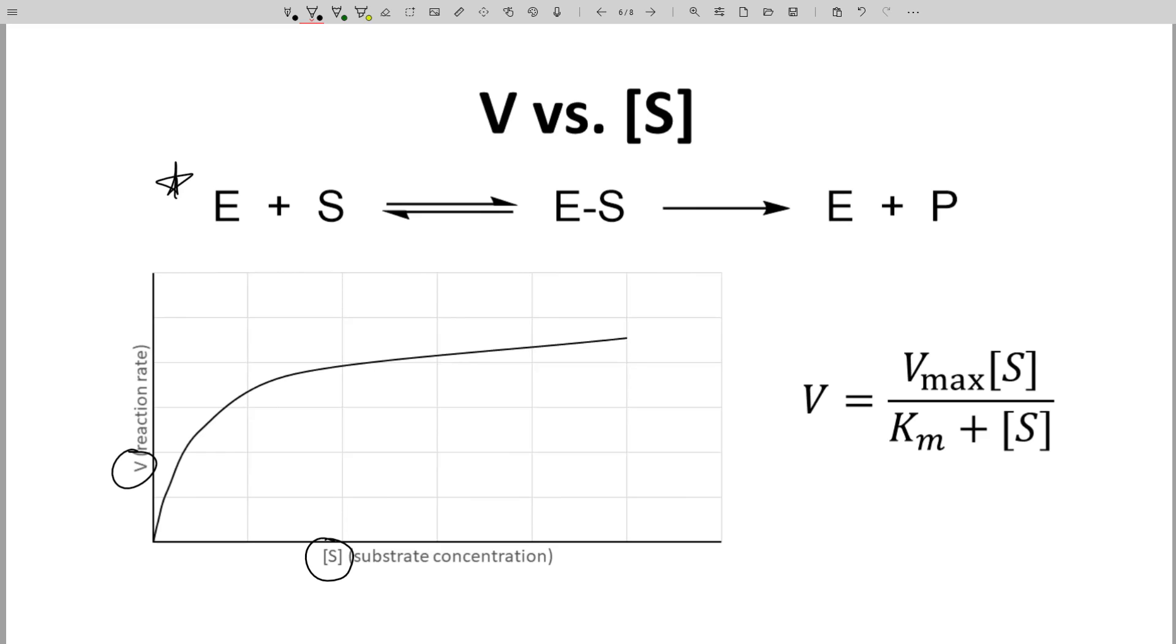Like all chemical reactions, enzyme-catalyzed reactions are controlled by collisions. As you increase the concentration of a reagent, like the substrate, you get more collisions and the rate of the reaction increases. Notice that the rate does not increase linearly. The rate tapers off at some point. It plateaus.